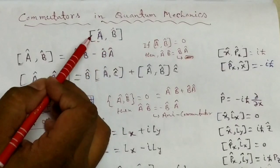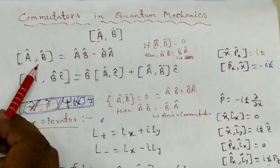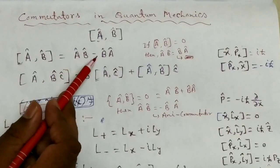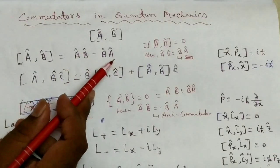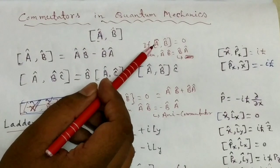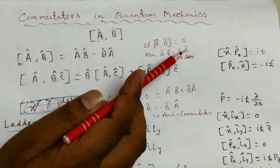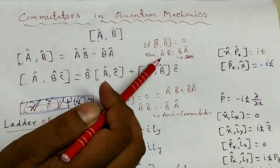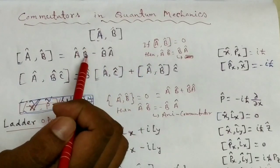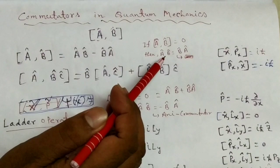Suppose A and B are two operators. We write the commutator using square brackets: [A, B] = A_cap * B_cap minus B_cap * A_cap. In linear algebra, if [A, B] = 0, then they commute with each other, and we can write A_cap * B_cap = B_cap * A_cap.